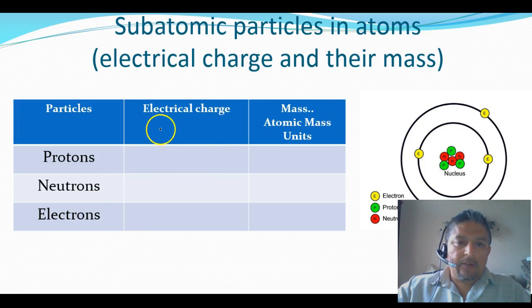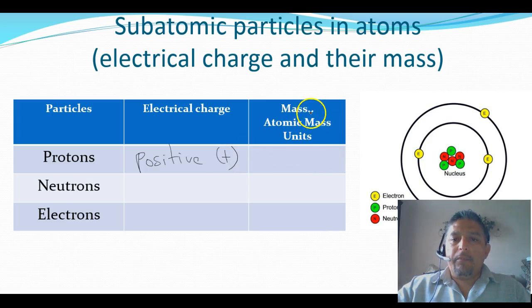we are going to be including the protons which have an electrical charge that is positive. The mass or atomic mass units, this is the relative weight of these particles. Remember these particles inside the atoms are very, very small. So it would be improper to use like grams or kilograms or any other type of units to measure their weight. So instead they use atomic mass units.